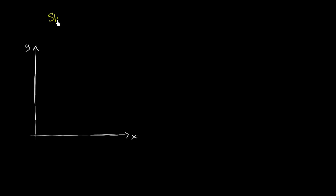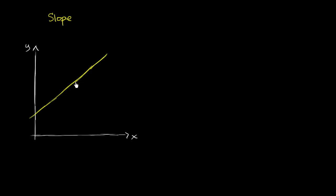Let's review the idea of slope, which you might remember from your algebra classes. The slope is just the rate of change of a line, or the rate of change of y with respect to x as we go along a line. You could also view it as a measure of the inclination of a line — the more inclined the line is, the more positive a slope it would have. This line has a positive slope; it's increasing as x increases. And if it had an even higher inclination, it would have an even higher slope.